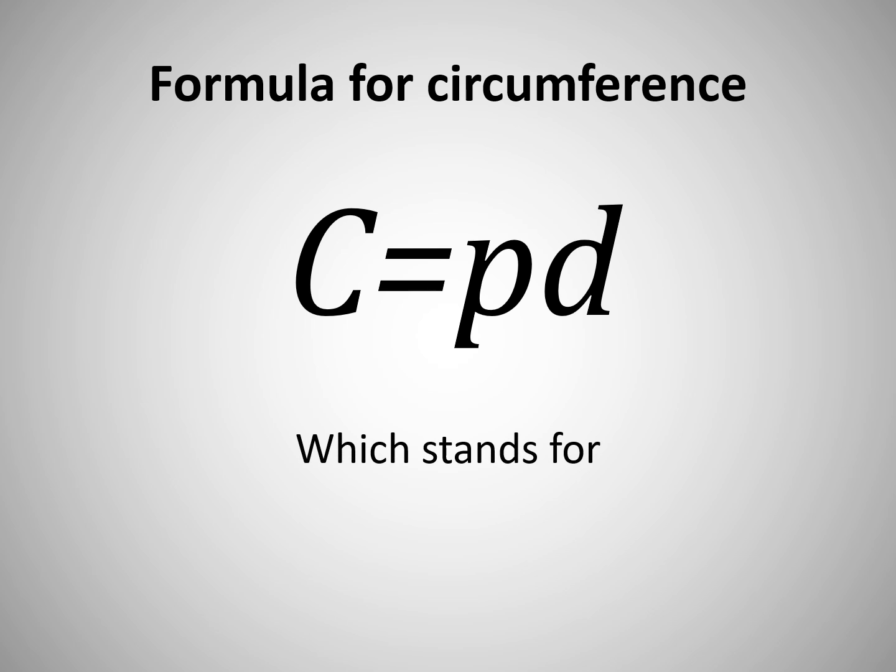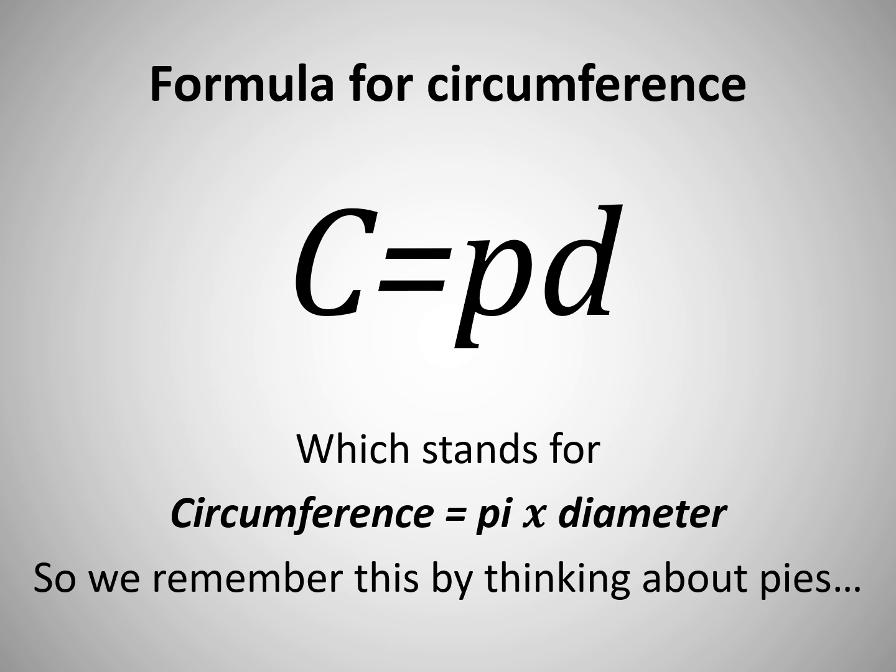Now we're going to look at the formula for the circumference which is C equals πd, which stands for circumference equals pi times diameter. So we're going to remember this by thinking about pies.